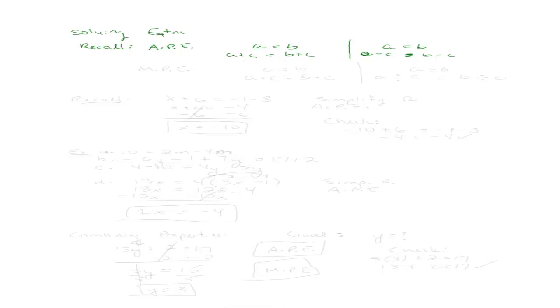That's the addition property of equality. There's also the multiplication property of equality. That one says that given an equation with two equal sides, I can multiply both sides by the same number and the equation still holds. Or I can divide both sides by the same number and the equation is still going to hold.